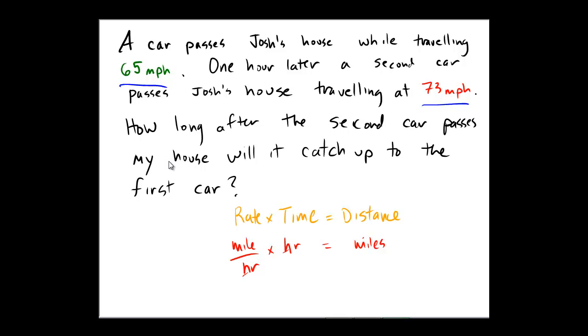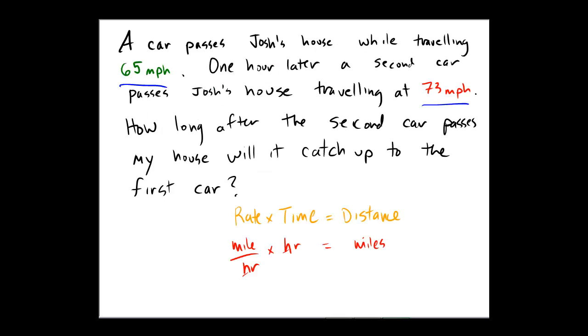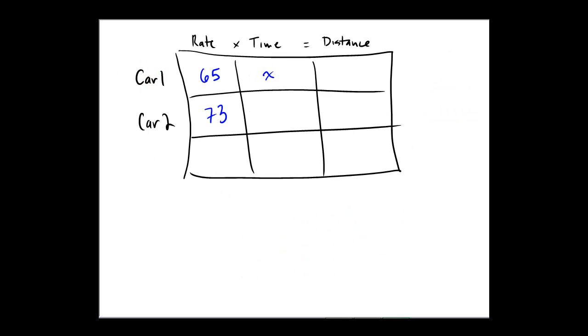Now for time. How long after the second car passes my house will it catch up to the first car? That's really the unknown of the problem. Let's assign a variable. We'll say Car 1 drives for x hours. Remember that Car 2 passed an hour later. So the amount of time that Car 2 will have driven past my house will be one less hour than the first car had traveled, so x minus 1.